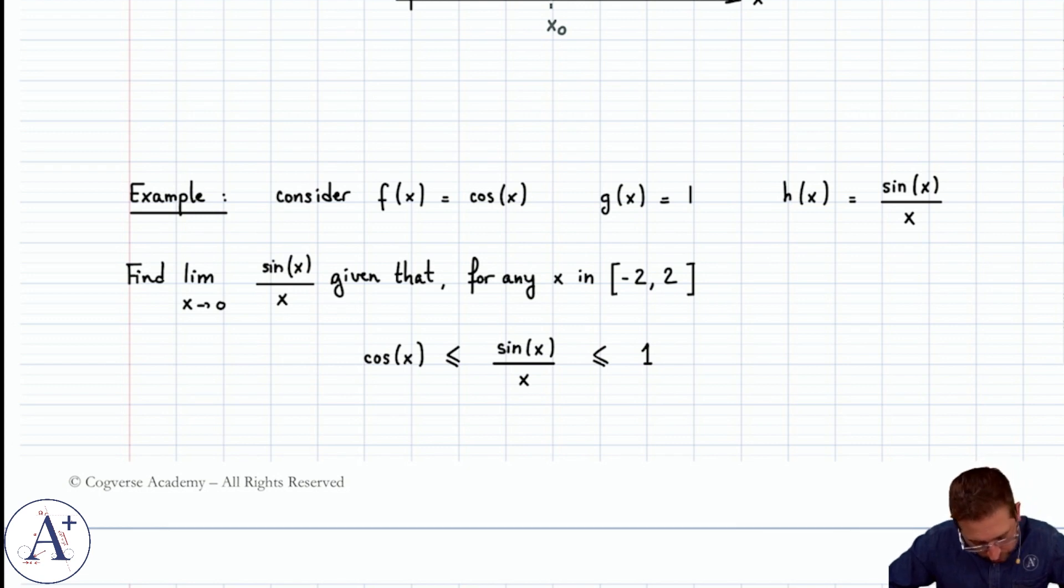In addition, at 0, cos(x) is going to have a limit that is equal to 1. And of course 1 has a limit of 1, so we anticipate that sin(x)/x is going to have a limit of 1.